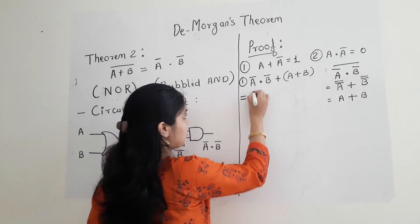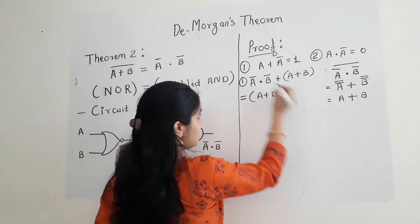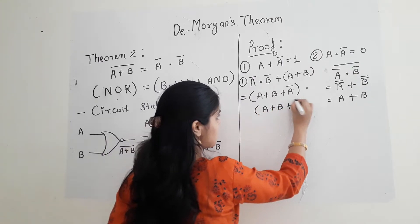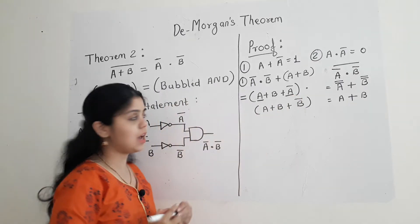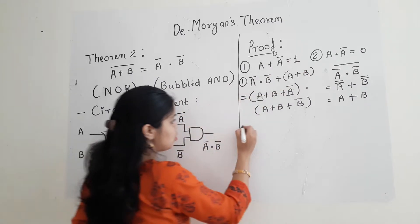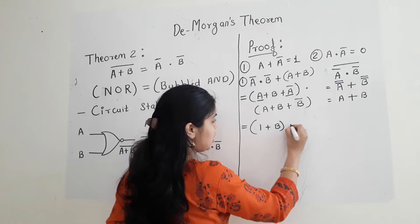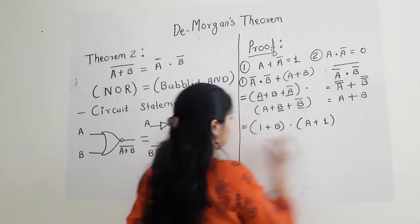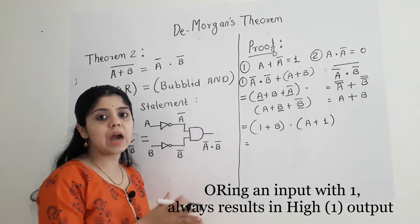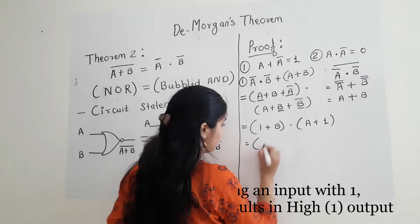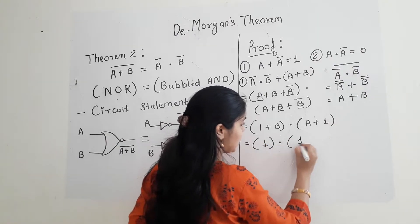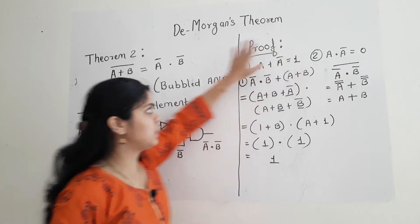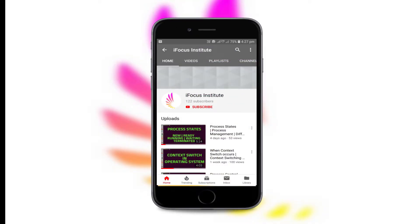Applying the distributive law I open the brackets to get A plus B plus A-bar, dot A plus B plus B-bar. Now A plus A-bar gives 1, so the first term becomes 1 plus B. And B plus B-bar gives 1, so the second term becomes A plus 1. Any variable added to 1 gives 1, so 1 plus B equals 1, and A plus 1 equals 1. Therefore 1 dot 1 equals 1, and my first complement theorem is proved.